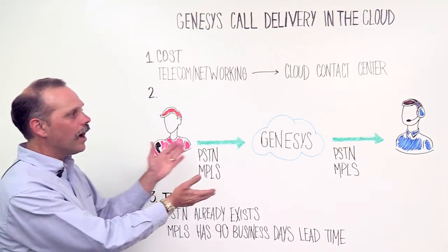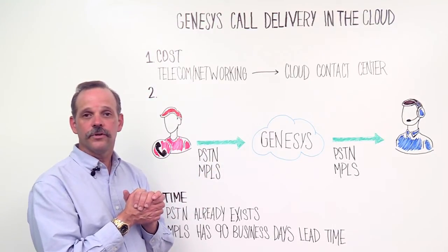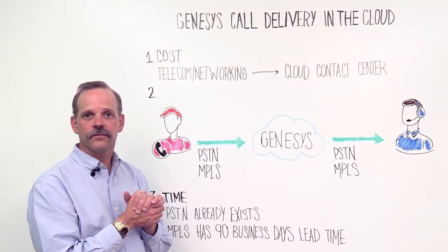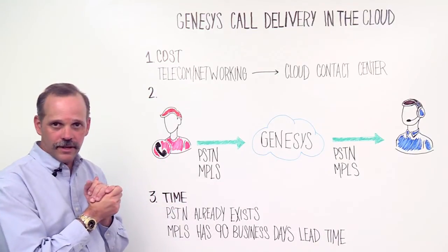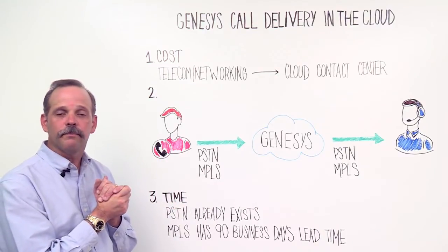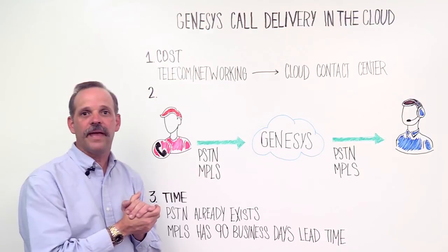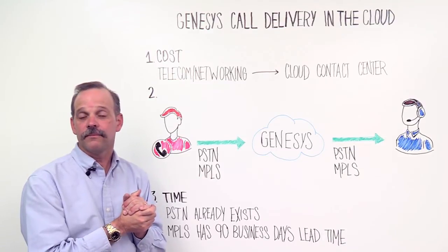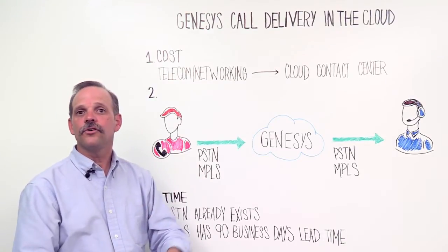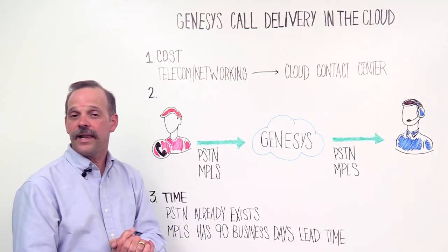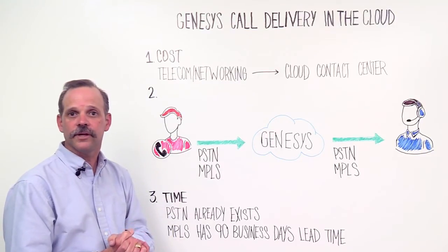Another key part of connecting to the cloud is bursting. Normally you have a static amount of bandwidth, but by using something like MPLS, it allows you to burst above your static amount of bandwidth, allowing extra flexibility.